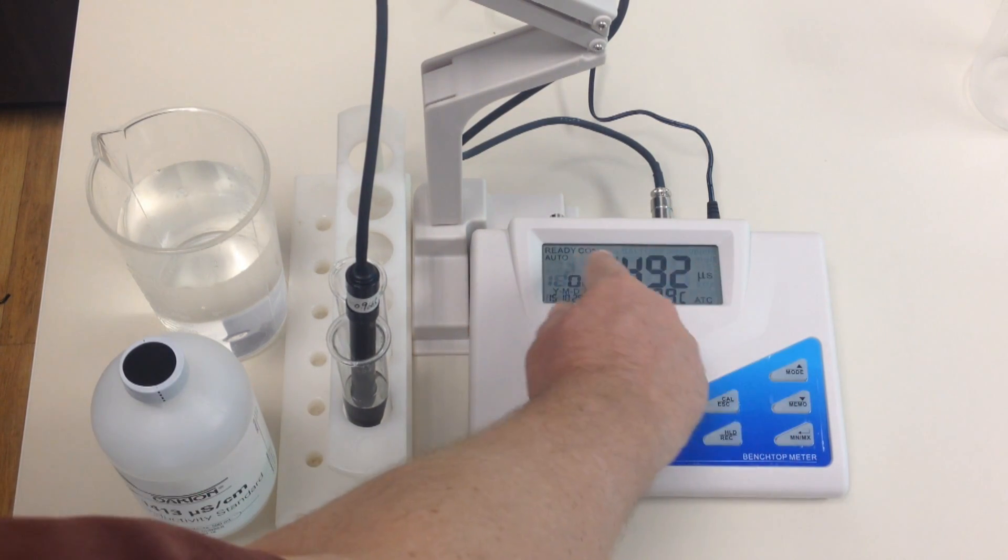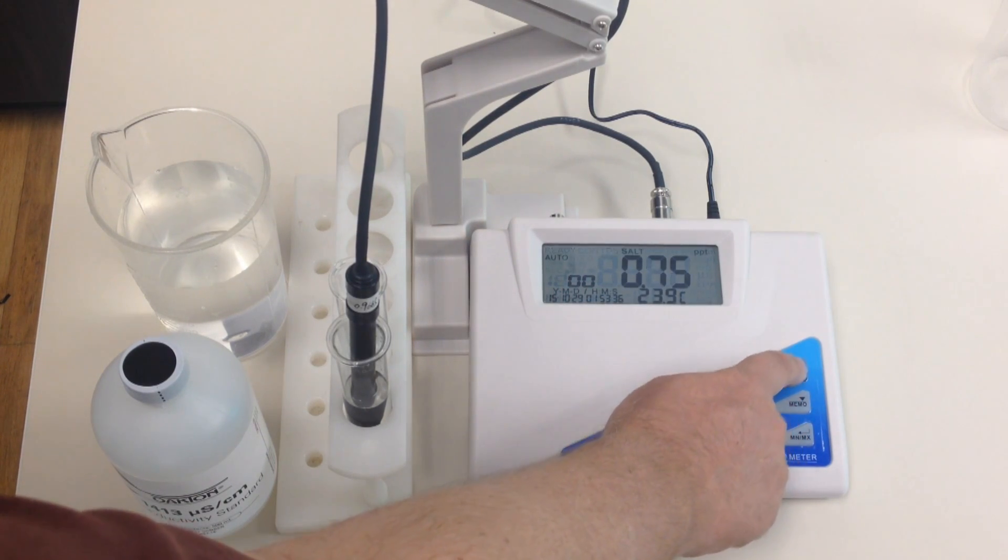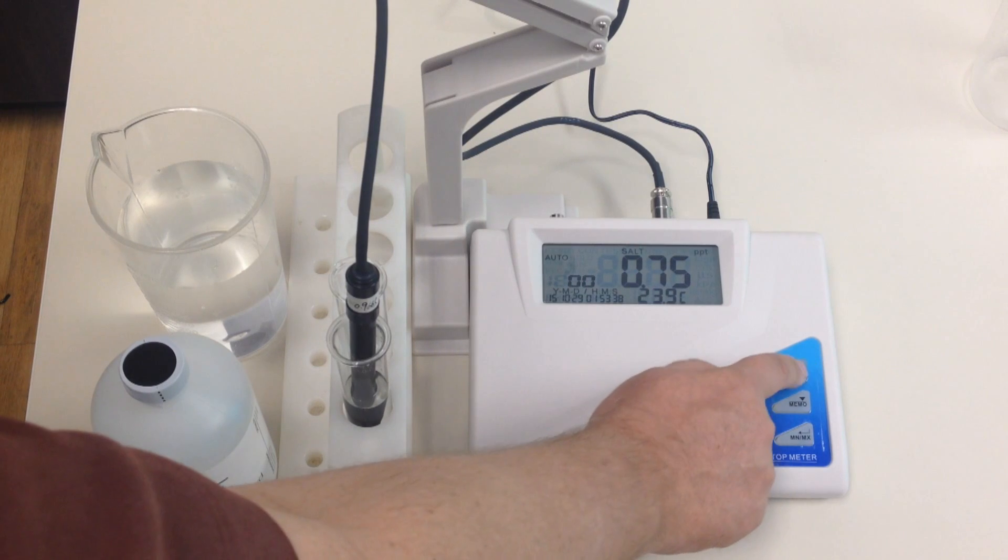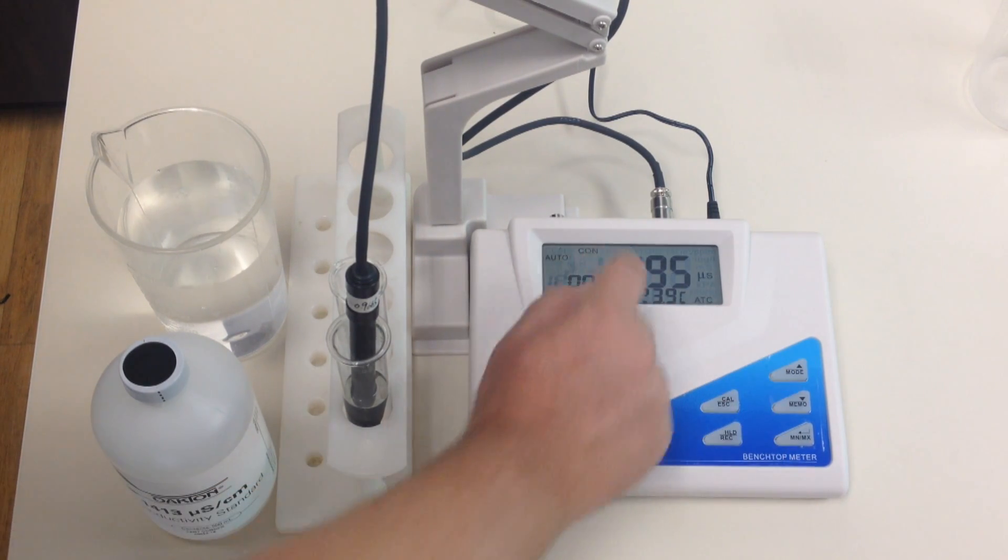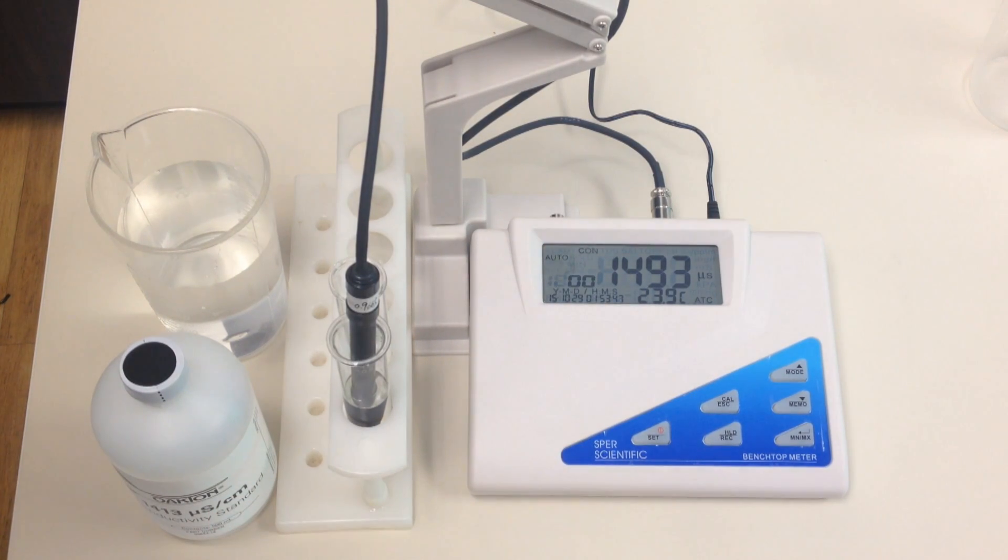But let's say it was in a different one, such as pH or salt. You would just use the mode button, as you can see I'm hitting the mode button, and moving across until I came back to conductivity. So that's the first step, you want to make sure you're in the right mode.